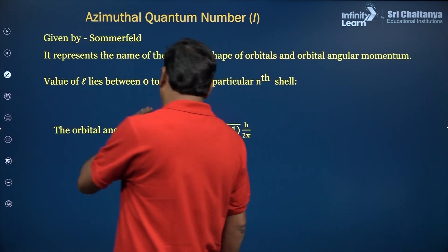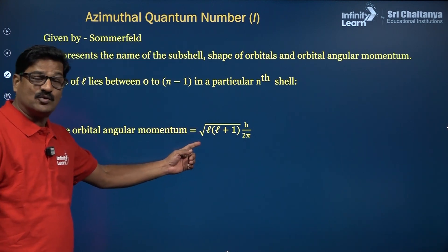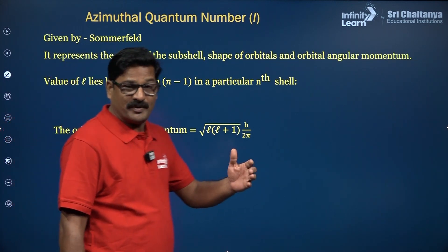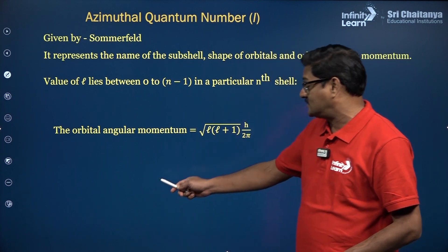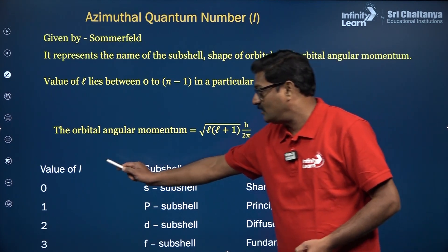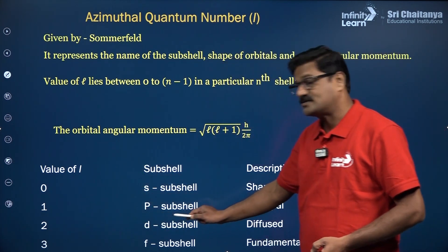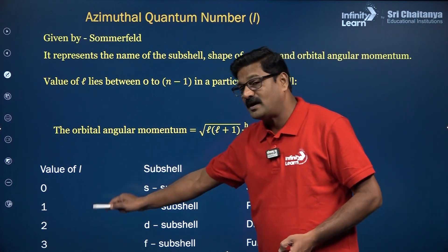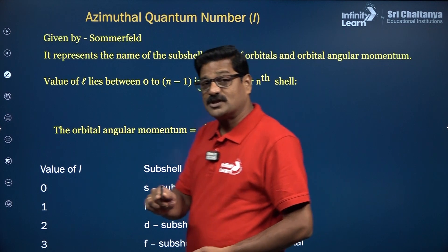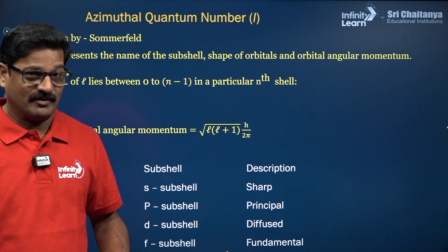The orbital angular momentum is also signified by the azimuthal quantum number, given as √(L(L+1)) × h/2π. If L = 0, it is the S sub-shell; if L = 1, it is the P sub-shell; if L = 2, it is the D sub-shell; and if L = 3, it is the F sub-shell. So the azimuthal quantum number signifies to which sub-shell an electron belongs.